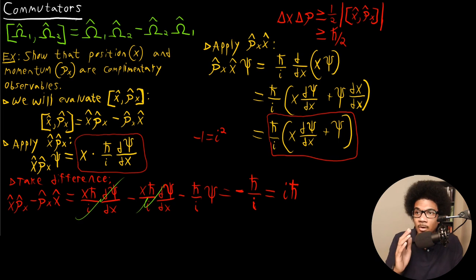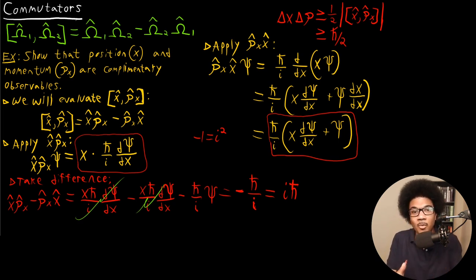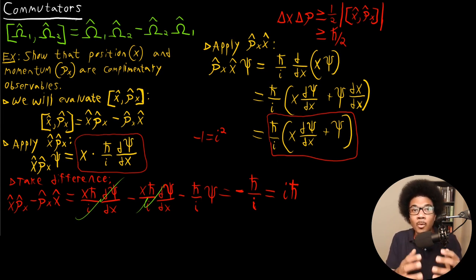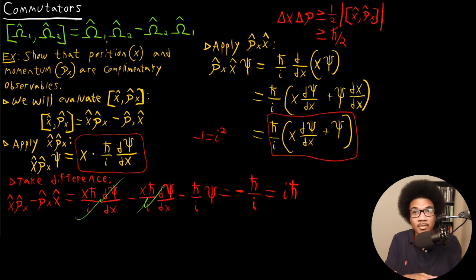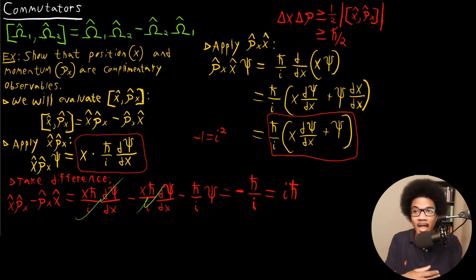So this is an example of how to evaluate a commutator. Every set of complementary observables will correspond to operators that have a non-zero commutation relation. You should be able to evaluate a commutator for any two complementary operators and get a non-zero result back, like we did here in this example.